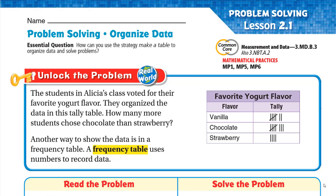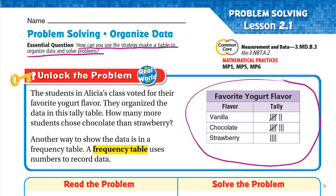Hello everyone. Today we'll start Chapter 2, Lesson 2.1: Problem Solving — Organizing Data. Our essential question is: how can you use the strategy 'make a table' to organize data and solve problems? Today we will look at a tally table and draw another table called a frequency table, which has numbers instead of tally marks.